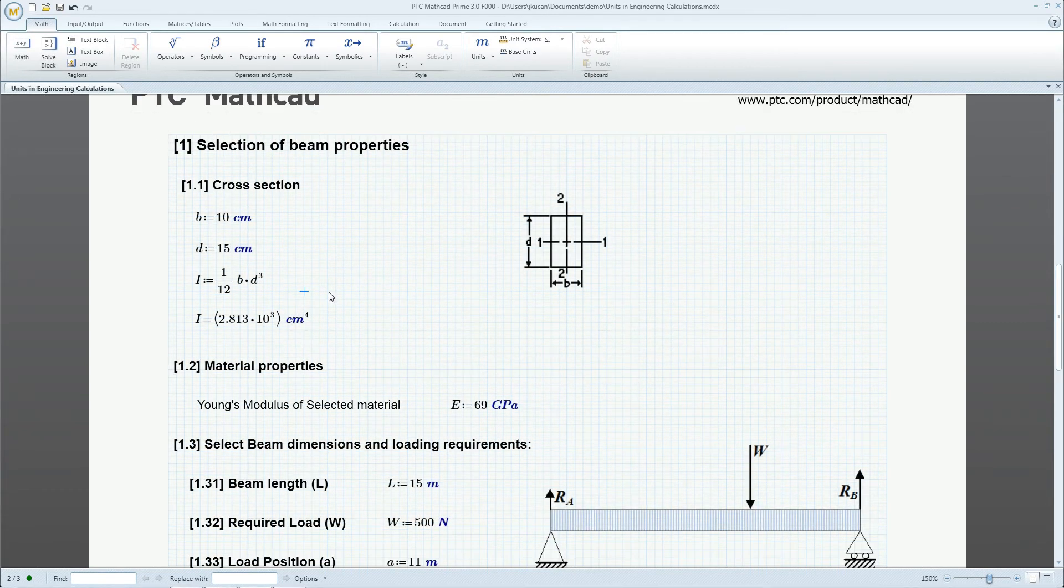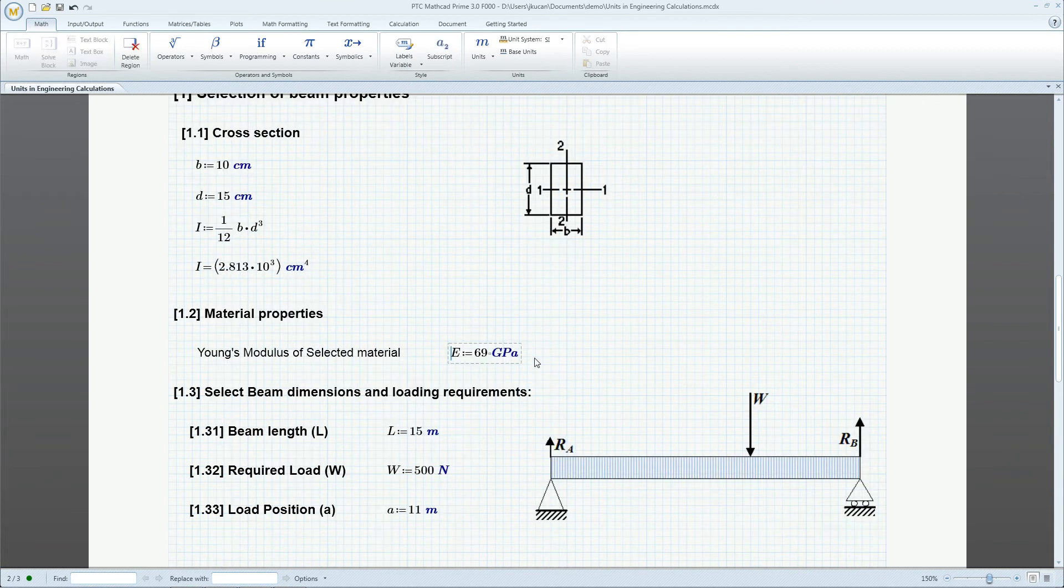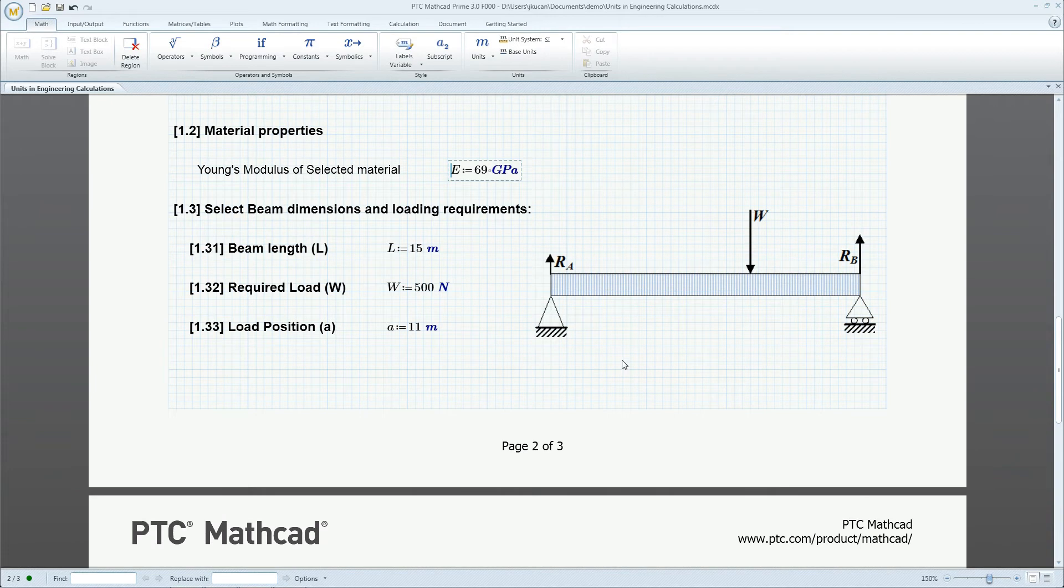We specify the cross-section of a rectangular beam as well as its length and Young's modulus. We then define the load and its placement along the beam.